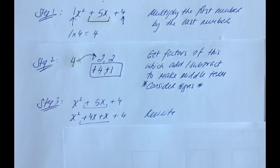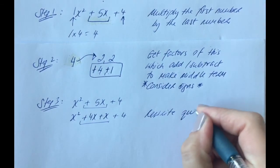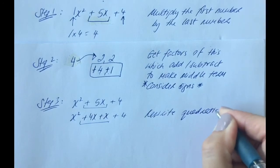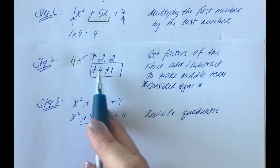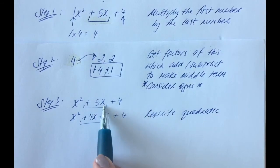Which is, of course, the same thing, but it's going to help us factorize this quadratic for our final step. So rewrite the quadratic. In other words, using the factors that you've considered in step 2 to break apart the middle term.